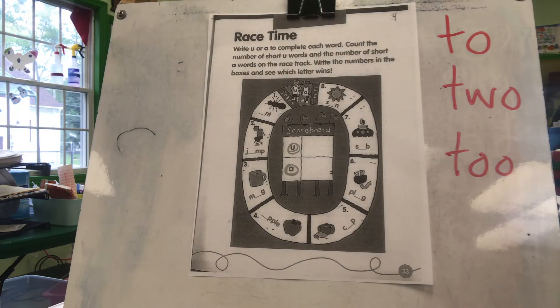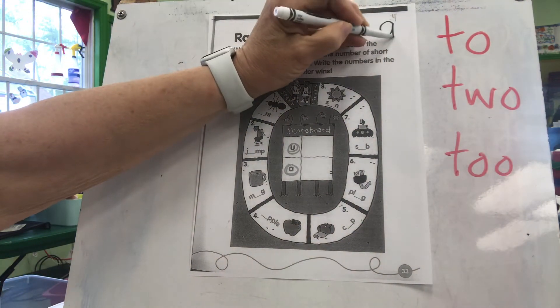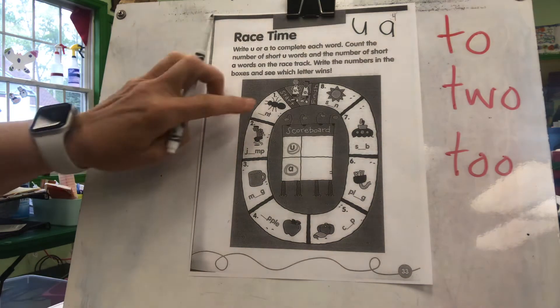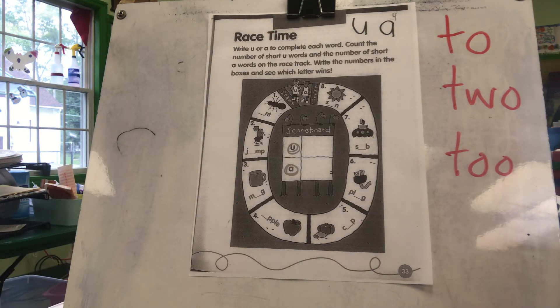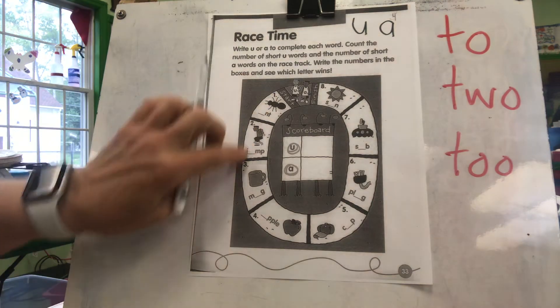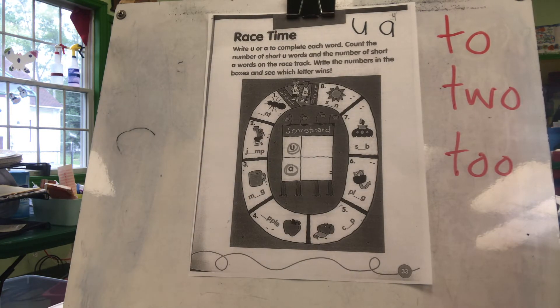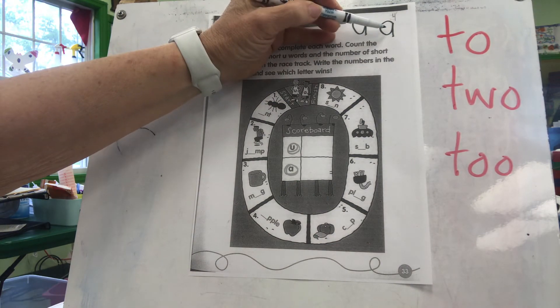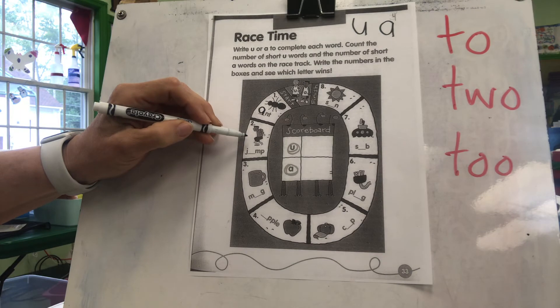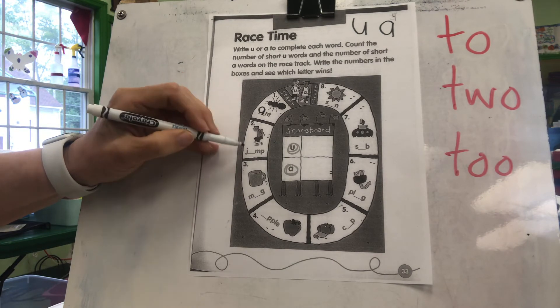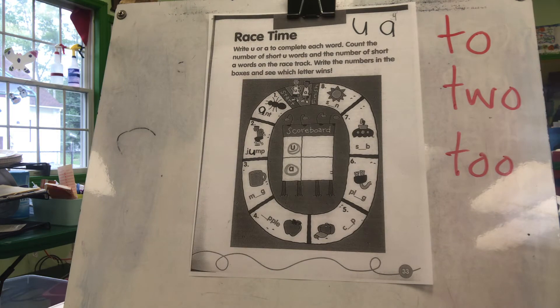All right. This is a tough one. We're going to write a U, the vowel U, or the vowel A, only those two. We don't have to worry about I and O, to complete each word. So these words all have a U or an A at the beginning or in the middle of the word. Then we're going to count the number of short U words and the number of short A words on the racetrack. Write the numbers in the boxes. Short U, short A, and we'll see which letter wins. All right. Let's do a couple together. We're using either a U or an A. Ant, jump. All right. I think you can figure this out. Use that brain. You've got one. Use it. Come back to me when you're ready. Go.